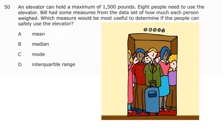All right, on to number 50. An elevator can hold a maximum of 1,500 pounds. Eight people need to use the elevator. Bill had some measures from the data set of how much each person weighed. Which measure would be the most useful to determine if the people can safely use the elevator?